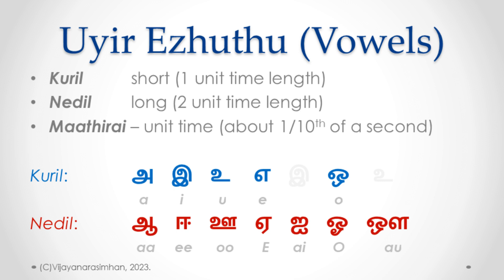There are two long vowels that don't have a short counterpart: I and OO. For them, you'll notice the E sound and OO sound at the ending. So in grammar, wherever a short counterpart is needed for these two, we use E and OO respectively. So five short vowels and seven long vowels — we will learn them in detail in the second lesson.